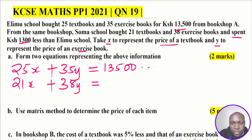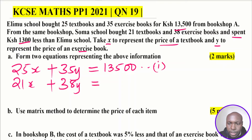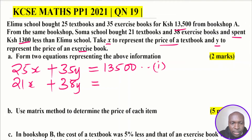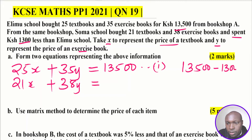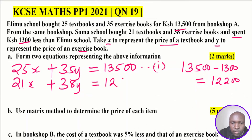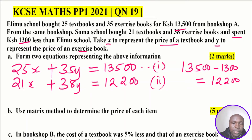The first equation is for Elamu School, and the second one is for Soma School. Since Soma School spent 1,300 less, we take 13,500 minus 1,300 to get 12,200. So the second equation is 21X + 38Y = 12,200. Those are the two equations representing the above information.